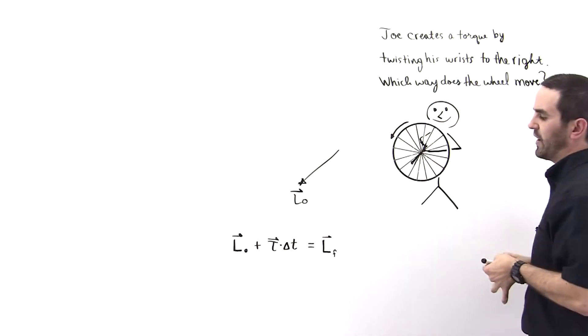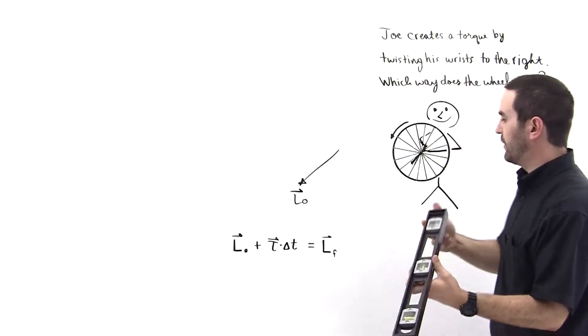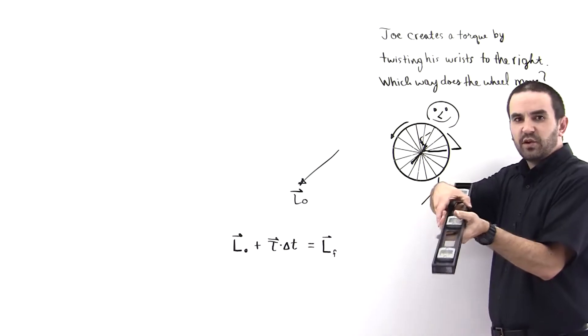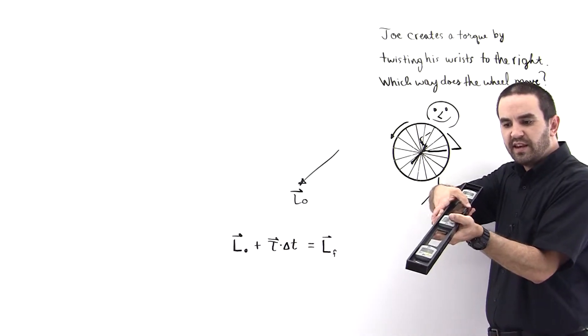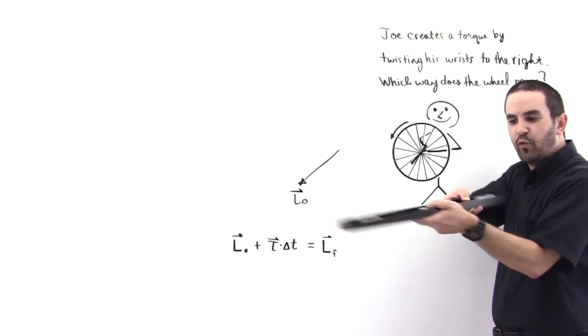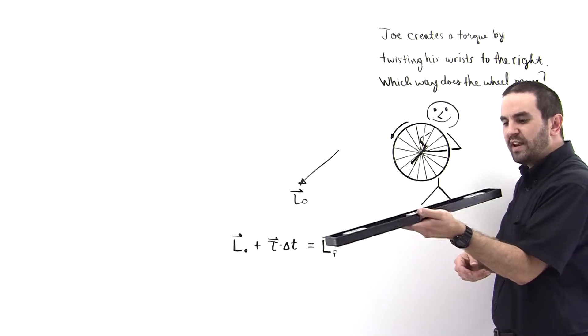Then we need to get the direction for the torque impulse. So we take our pencil out. I'm going to use this bar for demonstration. Take our pencil out on the exam and he's going to take his wrist and rotate like this. He's rotating his wrist to the right. So the bar is rotating to the right.